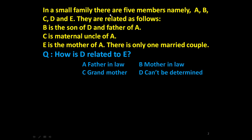The given problem is in a small family there are five members namely A, B, C, D and E. They are related as follows. B is the son of D and father of A. C is maternal uncle of A. E is the mother of A. There is only one married couple.